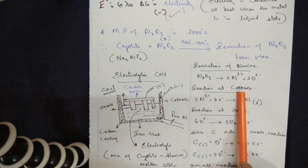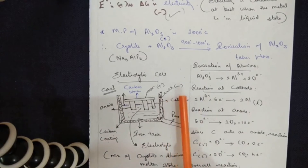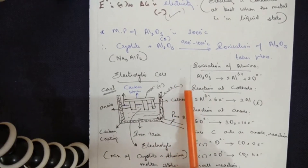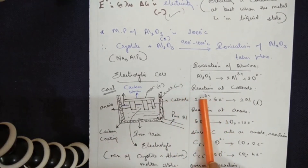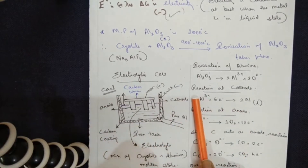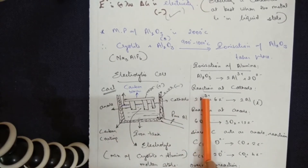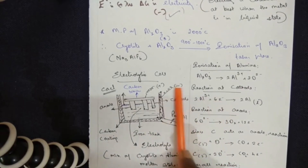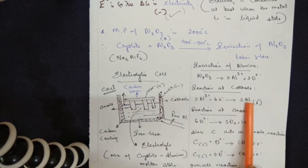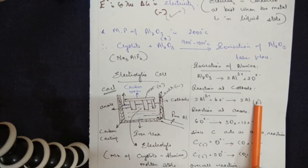At the cathode: Al³⁺ ions move toward the cathode, which is rich in electrons. Each aluminium atom requires 3 electrons to become a complete metal atom. With 2 aluminium atoms, 6 electrons are needed. The Al³⁺ ions accept 6 electrons from the cathode and are converted into pure liquid aluminium metal.